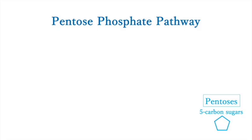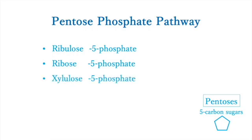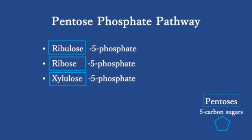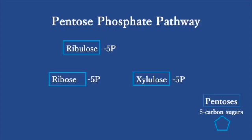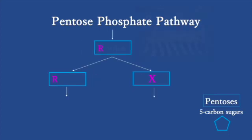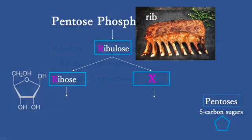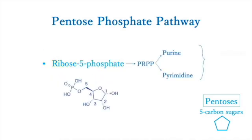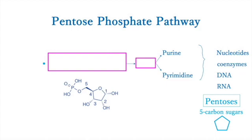Several pentoses are generated in this pathway: ribose-5-phosphate and xylulose-5-phosphate. Ribose-5-phosphate is used in the synthesis of nucleotides and nucleic acids. It is converted to PRPP and used in the synthesis of DNA and RNA.